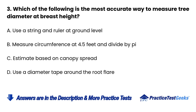Question 3. Which of the following is the most accurate way to measure tree diameter at breast height? A. Use a string and ruler at ground level. B. Measure circumference at 4.5 feet and divide by pi. C. Estimate based on canopy spread. D. Use a diameter tape around the root flare.